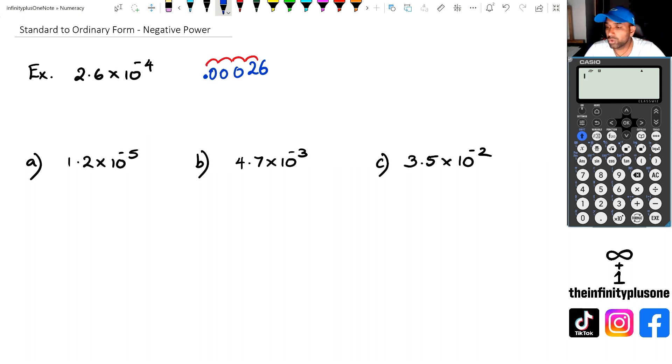Now if you're not sure about this, what you could always do again is just put that in the calculator: 2.6 times 10 to the power of negative 4, and you're going to end up with a fraction. Now if you've been using these types of calculators, quick little tip: shift equals gives you the number, which is 0.00026. And as you can see, that is the answer that I've actually got.